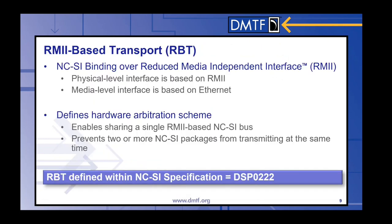The RMI-based transport, or RBT, is what NCSI can be bound to. This is a physical-level interface that also provides a transport function, and it is run over the reduced media-independent interface. There are some differences from RMII, and that is described in DSP-222 — which is why the title is RMI-based transport, otherwise known as RBT. This also defines a hardware arbitration scheme where you can share a single RMI-based NCSI bus to prevent two or more NCSI packages from transmitting at the same time.